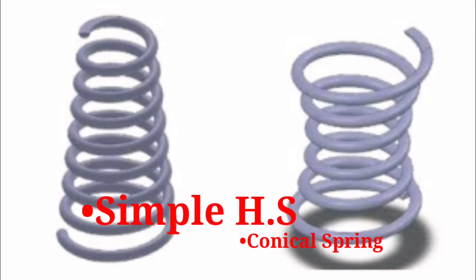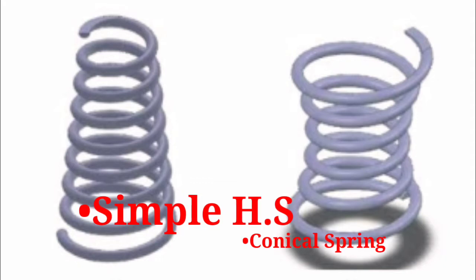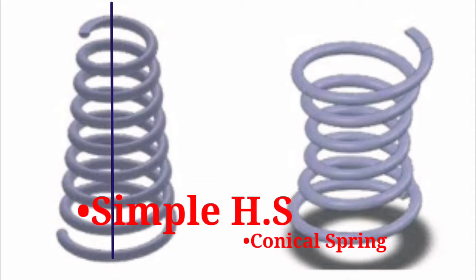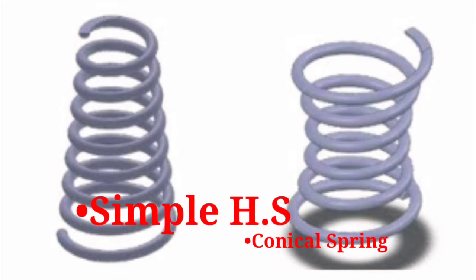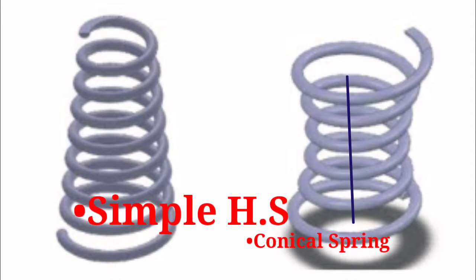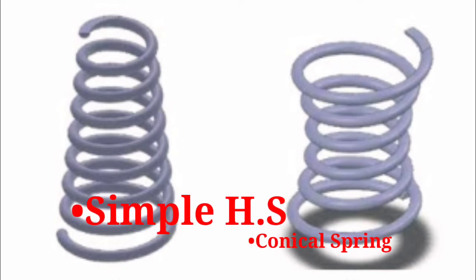There are types of helical springs. The first type is simple helical springs, where the axis of the helix is normal — it is called a simple helical spring. The second type is conical helical springs, where the axis of the helix is conical in shape. When you look at the spring you will see a conical shape.